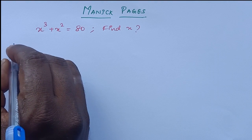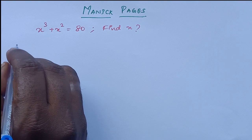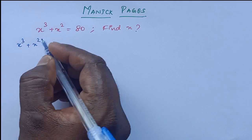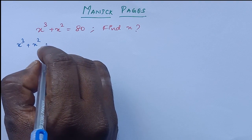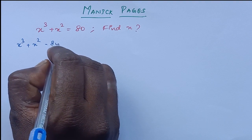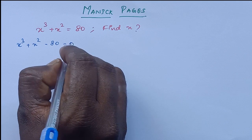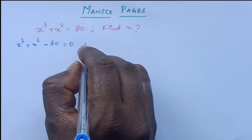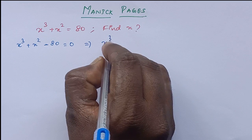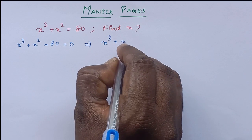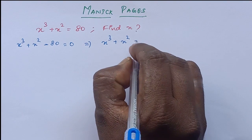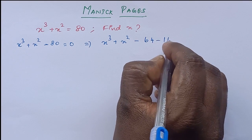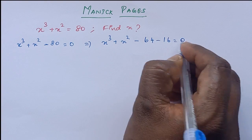So I am writing this like x cube plus x square minus 80 which is equal to 0. I take the 80 to this side. Now this one I am writing like x cube plus x square equals 80. We can split 80 as 64 minus 16, which is equal to 0.